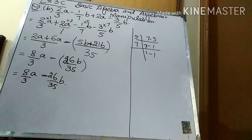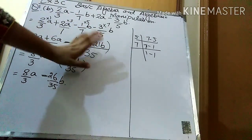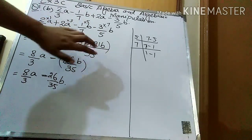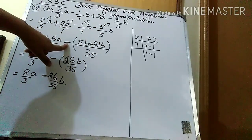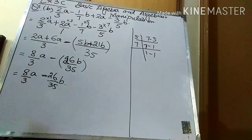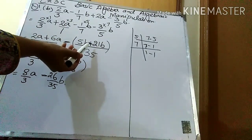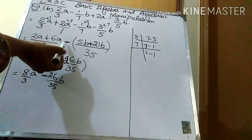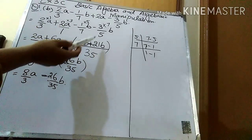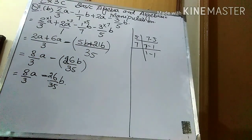I hope you are clear. Remember that whenever there is a minus sign outside the bracket, when you close the bracket you change the signs inside. There was a minus sign with 21b, so when I closed the bracket I changed the sign and that minus became plus. So 21 + 5 = 26, giving the answer 8/3a − 26/35b.